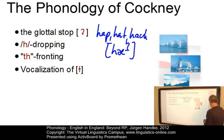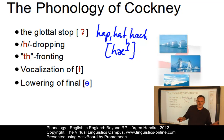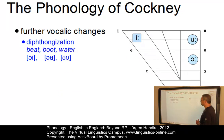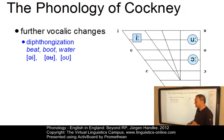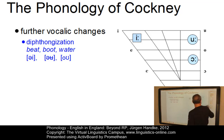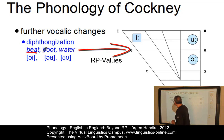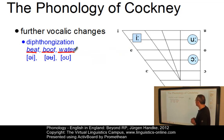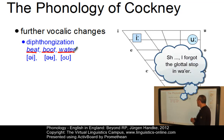Turning to vowels, the lowering of final schwa is a remarkable feature of Cockney, where words such as 'dinner' come out with a slight lowering of schwa to a more open position. Several monophthongs are also diphthongized in Cockney. For example, 'beat' would be diphthongized to 'bait,' 'boot' would come out as 'boat,' and 'water' would come out as 'water.'